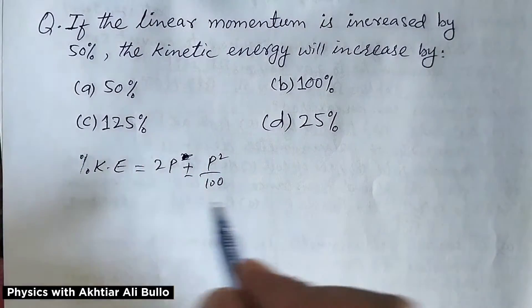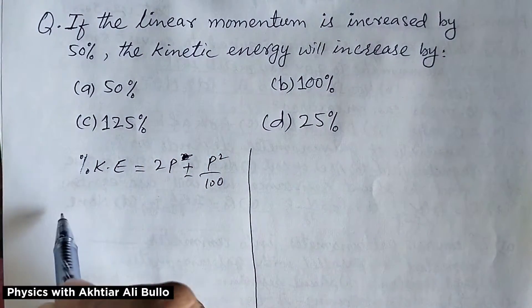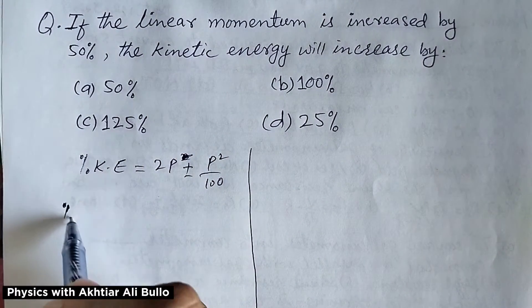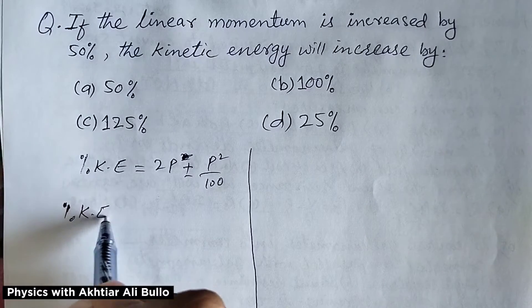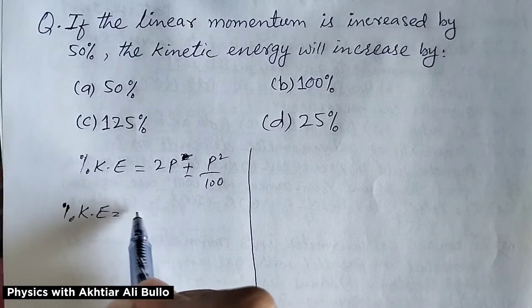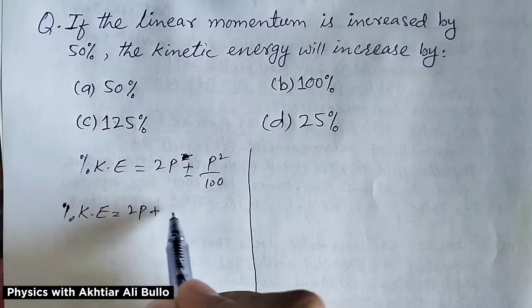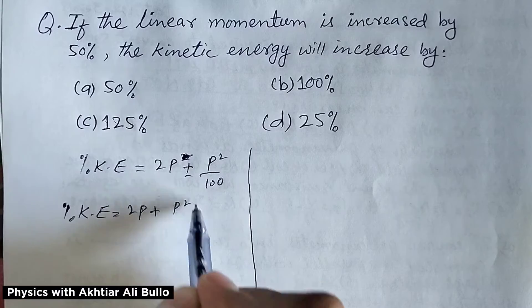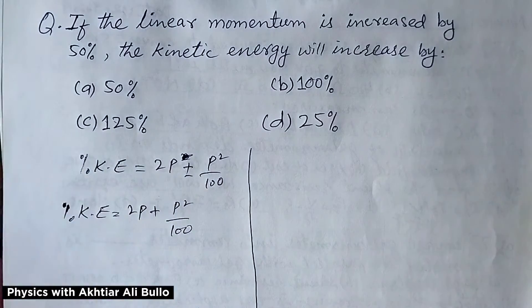In this condition, the formula will be: percentage change in kinetic energy = 2p + p² / 100.